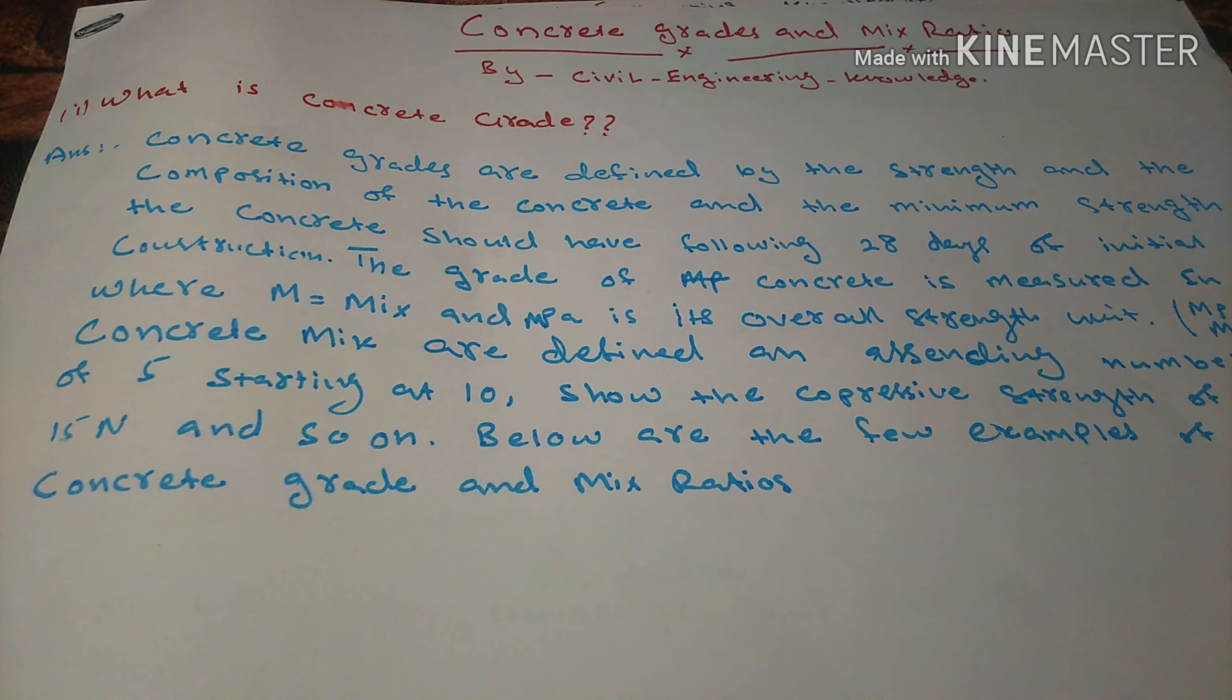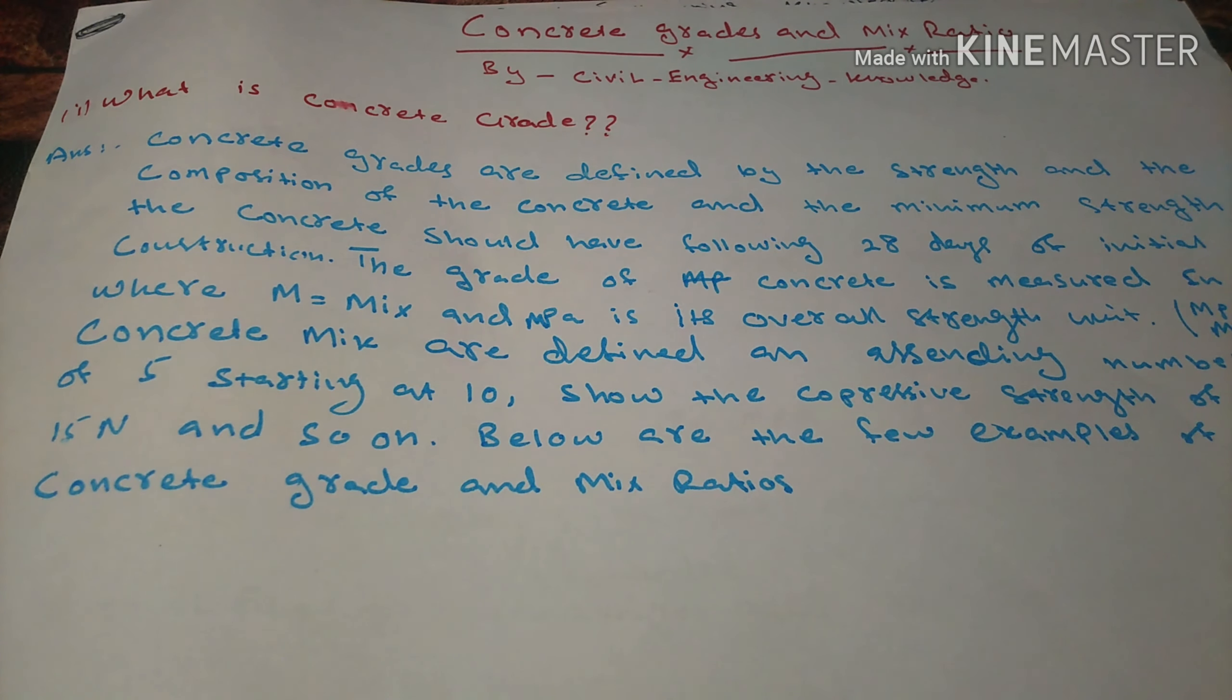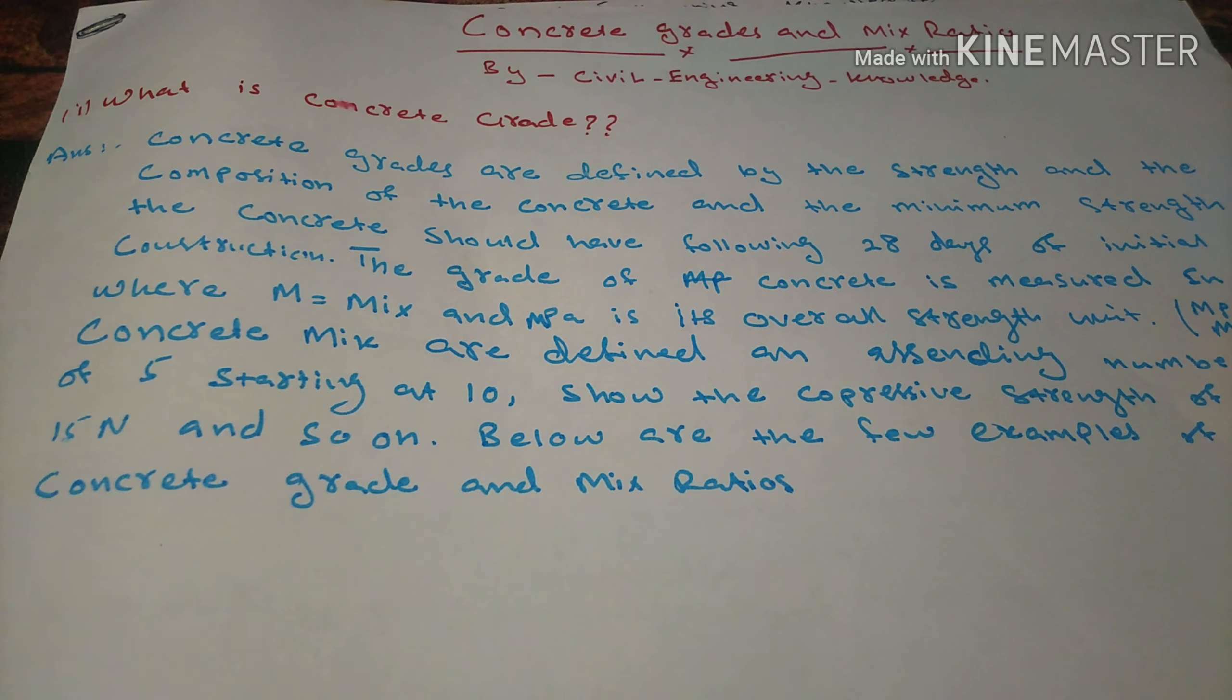Concrete grades start from M5 and so on in ascending order. In the ascending order you will see M5, M10, M15, M20.